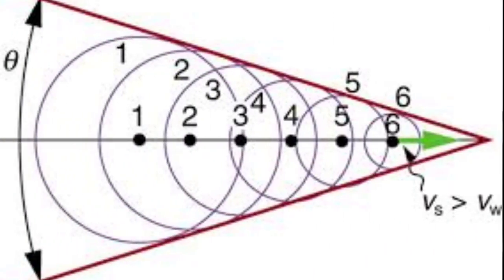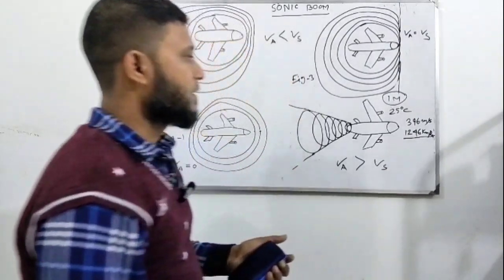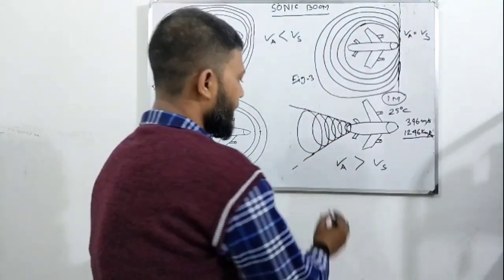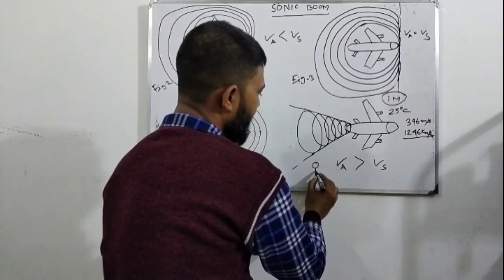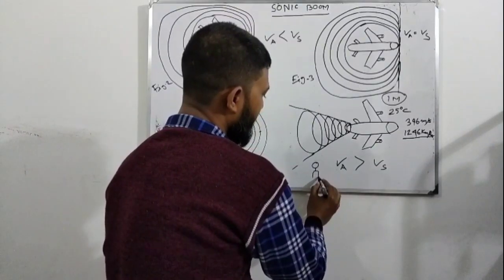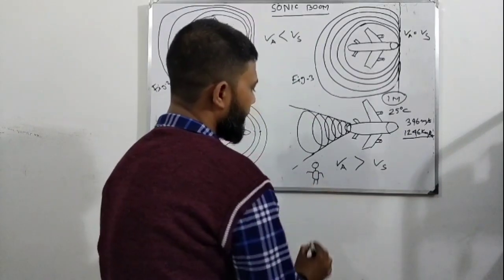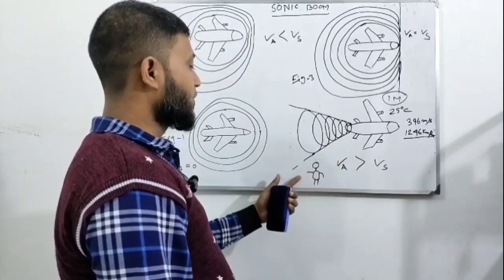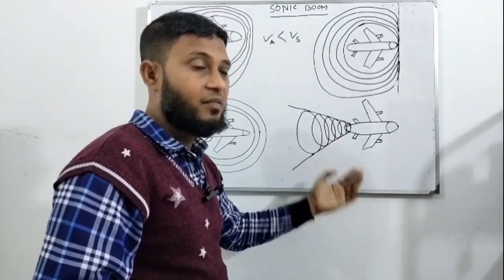The strongest sonic boom ever recorded was 144 pounds per square feet, and it did not cause injury to the researchers who were exposed to it. The boom was produced by an F-4 fighter jet flying just above the speed of sound at an altitude of 100 feet. For better understanding this topic, let us see a video clip.